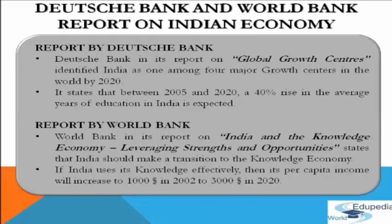The recent World Bank report, 'India and the Knowledge Economy: Leveraging Strengths and Opportunities', states that India should make a transition to the knowledge economy. If the Indian economy uses its knowledge effectively, as used by Ireland, then its per capita income will increase from a little over $1,000 in 2002 to $3,000 in 2020. The report further states that the Indian economy has all the key ingredients for making this transition: a large number of skilled workers, a well-functioning democracy, and a diversified science and technology infrastructure.